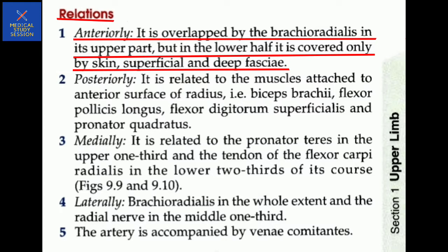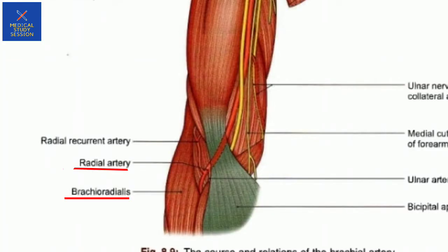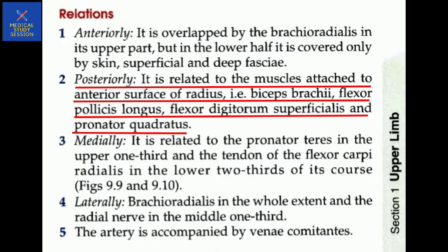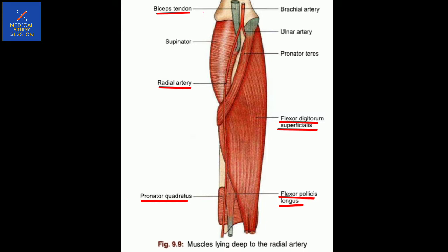Relations of the radial artery: Anteriorly, it is overlapped by the brachioradialis in its upper part, but in the lower half it is covered only by the skin and superficial deep fascia. Anteriorly, it is related to the muscles attached to the anterior surface of the radius - that is, biceps, brachialis, flexor pollicis longus, flexor digitorum superficialis, and the pronator quadratus. Posteriorly, it crosses the radius bone.